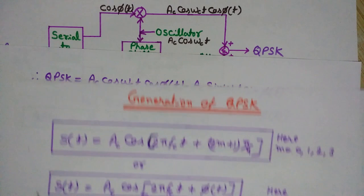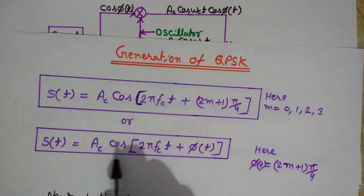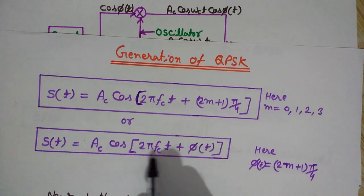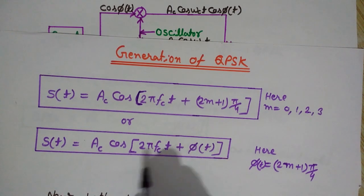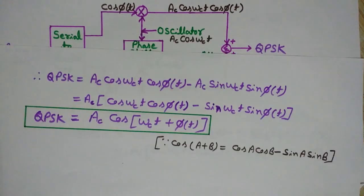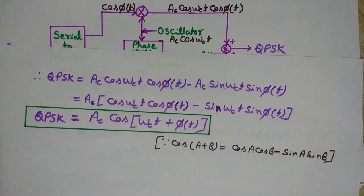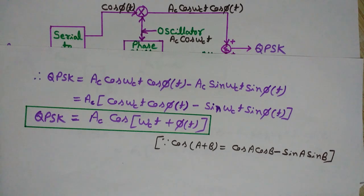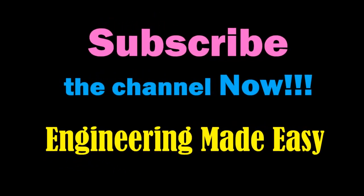This is the same expression we saw earlier for QPSK: Ac·cos(2πfct + φ(t)), since ωc = 2πf. So the derived expression matches the original QPSK mathematical expression. Hope you liked the video. In the next video we will see the demodulation of QPSK and other types of modulation schemes. Thanks for watching!